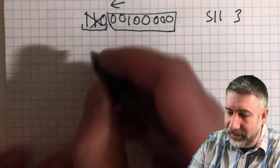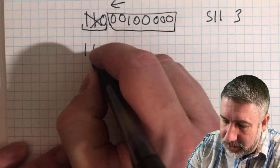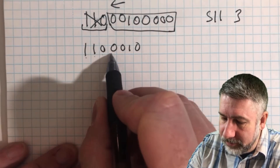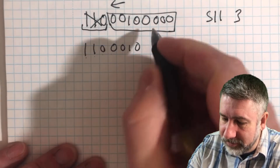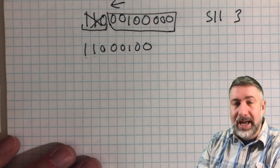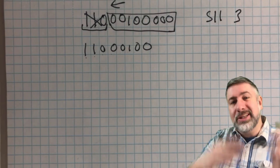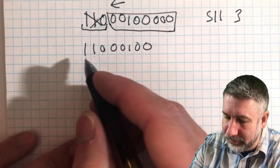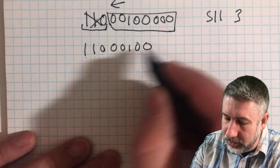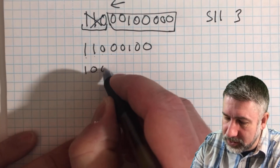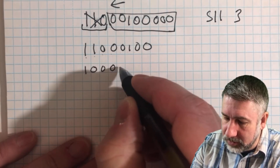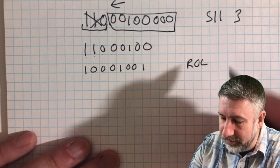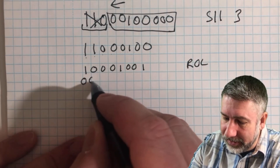But now instead of that, we're going to take our original number again — that's our original number — and instead we're going to put these bits one at a time back into the back of the number. So this one goes here, and the result becomes 1, 0, 0, 0, 1, 0, 0, 1. That's a rotate left, and then we're going to do that again.